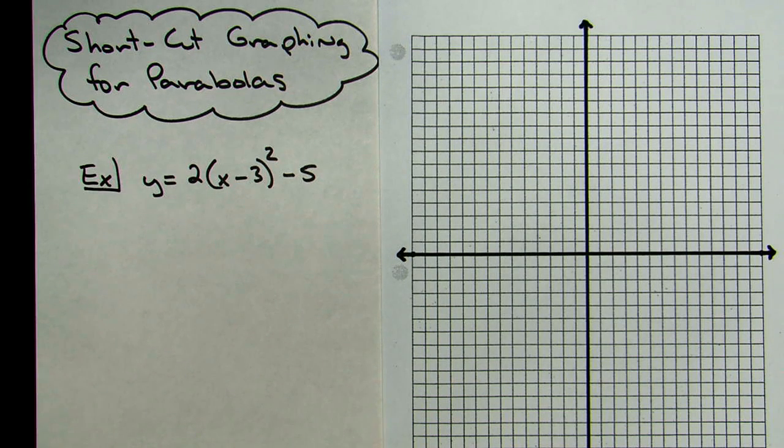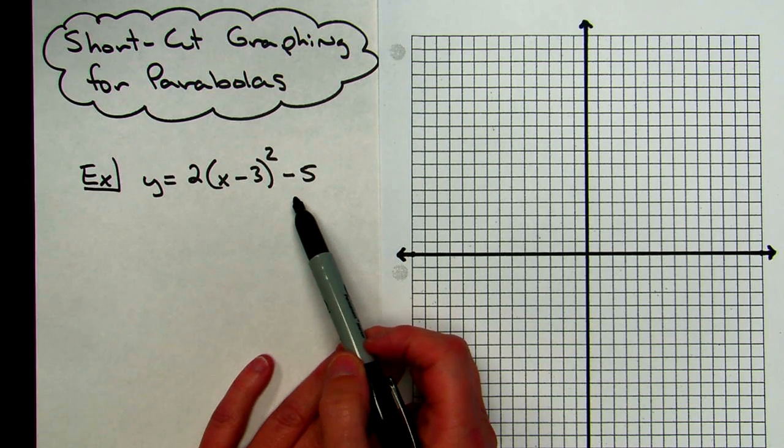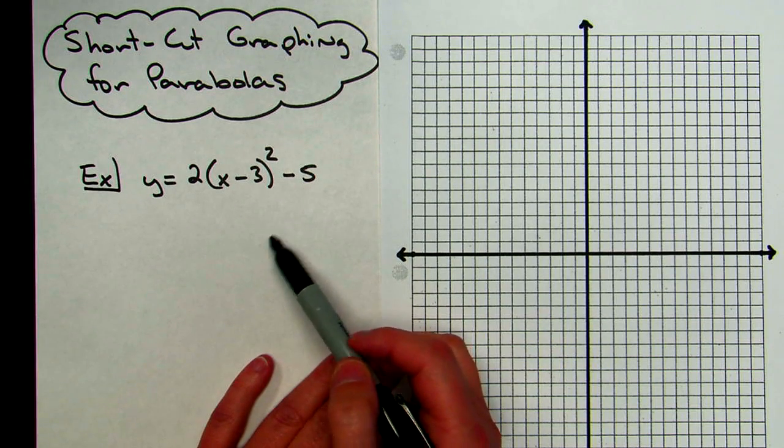All right, today we're going to be looking at a shortcut way to graph a parabola. The easiest way to do this is if it is in vertex form. You can do it when it's not in vertex form, it's just going to take a little bit longer.